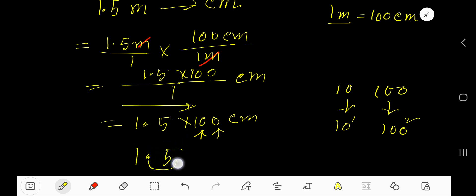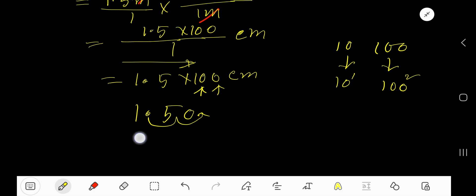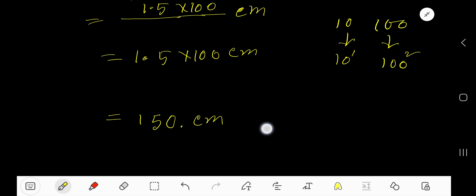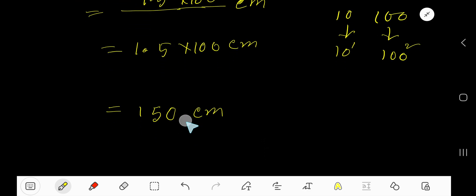So one plus older zero, two plus. So decimal point will come here: one five zero decimal centimeter. So we are getting, you can remove this decimal, so 150 centimeter is our answer.